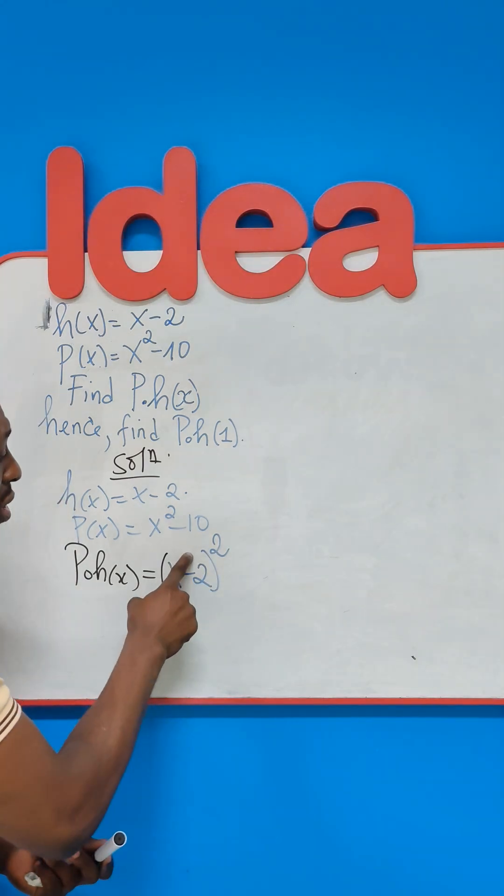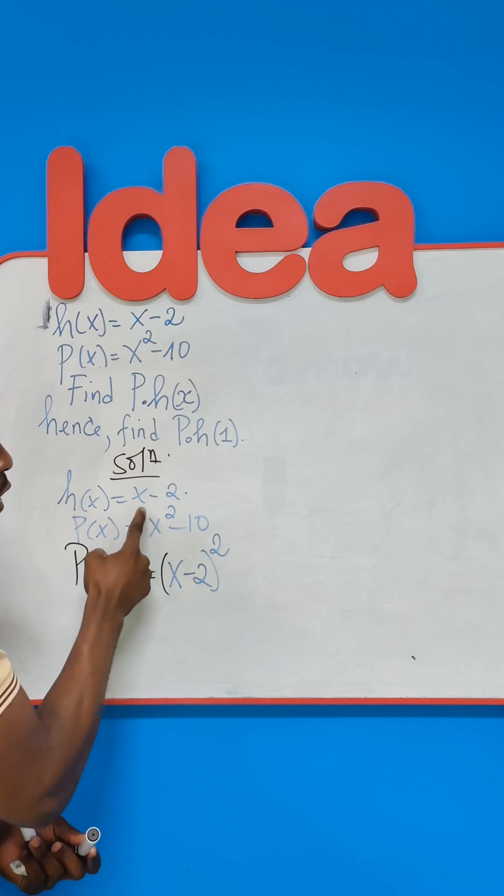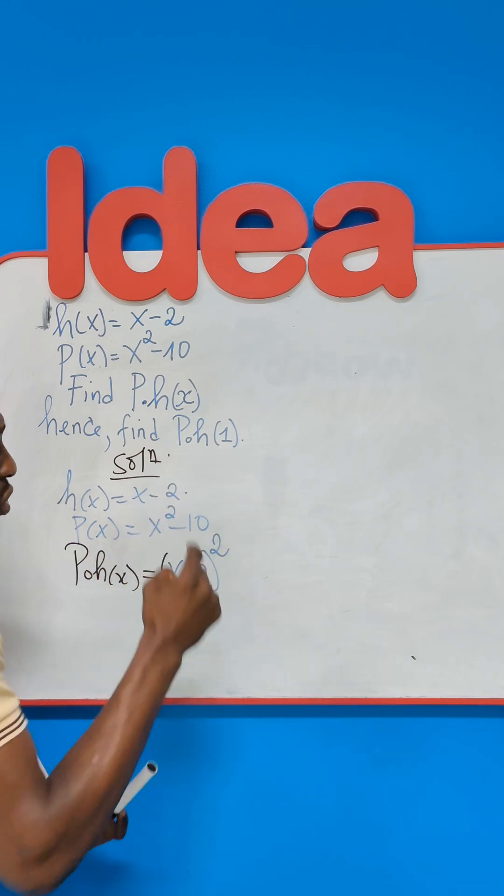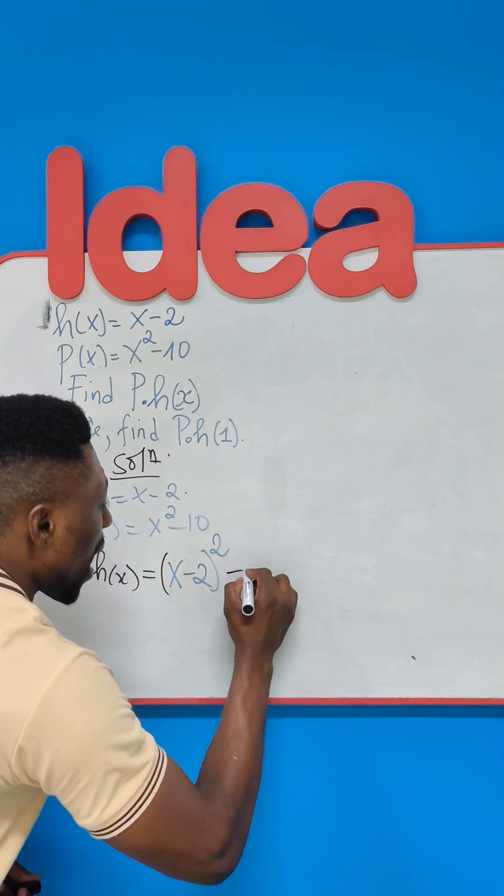Now, this first thing I've written here, what does it represent? It represents X squared in which I've substituted X for H of X, which is X minus 2. And then now I can continue the solution and say minus 10.